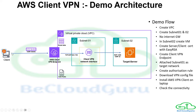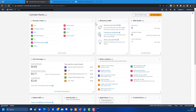Once the client is installed and configured, we'll initiate the connectivity. This is a machine with no public IP, so you'll see how it works when the VPN session is started. Let's jump to the AWS management console and start configuring things.